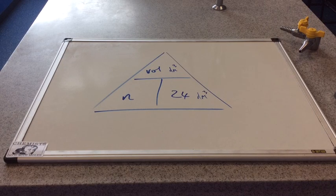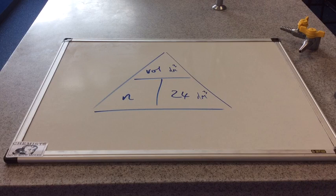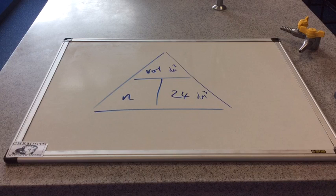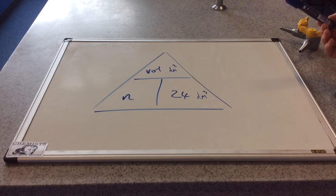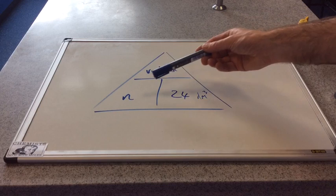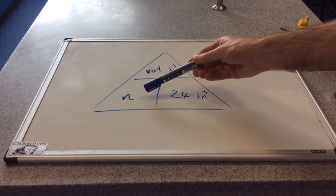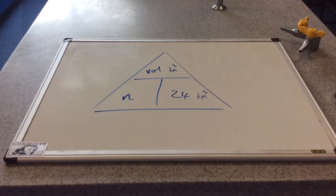So just as we had when we were looking at the masses of chemicals, there's a formula triangle that links these terms for gases, volumes of gases, and it looks like this on the board here. So we've got the volume measured in decimeters cubed, the number of moles, and 24 decimeters cubed.